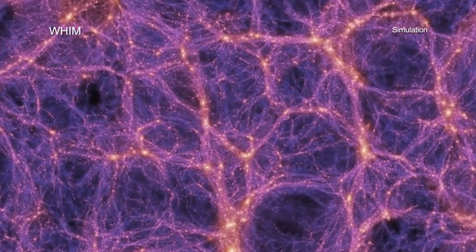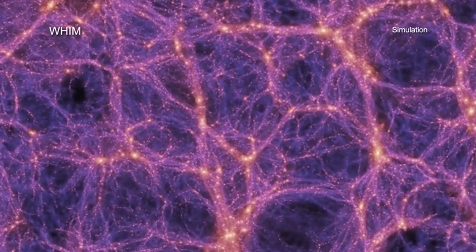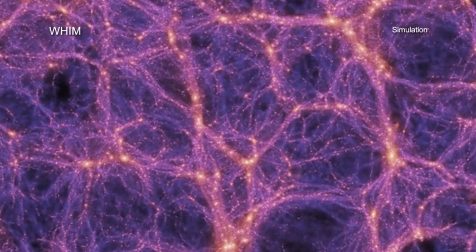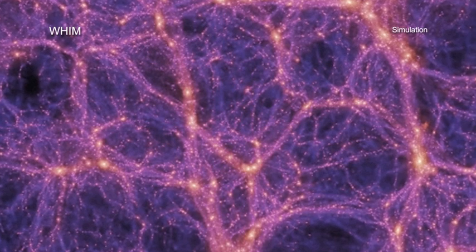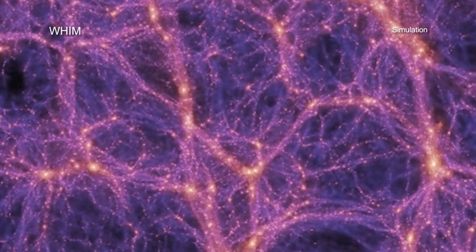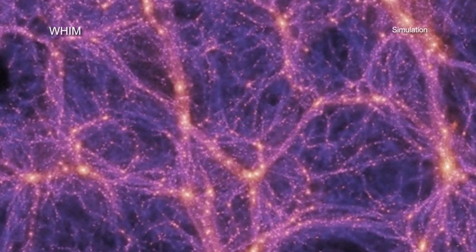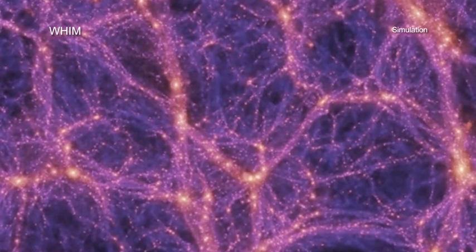Astronomers have spent decades looking for something that sounds like it would be hard to miss—about a third of the normal matter in the universe. New results from NASA's Chandra X-ray Observatory may have helped them locate this elusive expanse of missing matter.